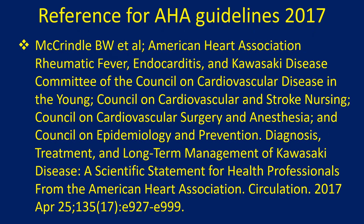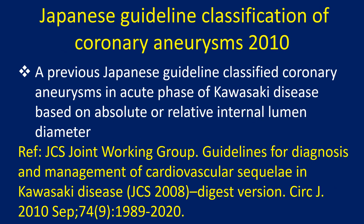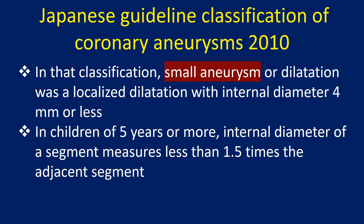Reference: AHA Guidelines 2017. A previous Japanese guideline classified coronary aneurysms in the acute phase of Kawasaki disease based on absolute or relative internal lumen diameter. In that classification, small aneurysm or dilatation was a localized dilatation with internal diameter 4 mm or less. In children of 5 years or more, the internal diameter of a segment measures less than 1.5 times the adjacent segment.